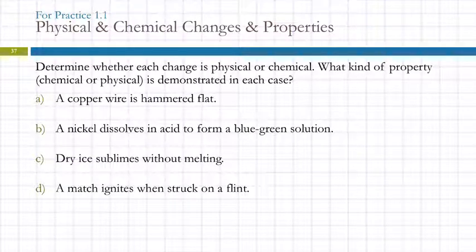Okay, so here we're supposed to determine whether each change is physical or chemical, and then what kind of property is demonstrated in each case. So we take a copper wire and we hit it with a hammer until it becomes flat. That's a physical change. We have changed the appearance of the wire, but it's still just copper atoms. And so the property there is that copper wire can be hammered flat. Is that a physical property or a chemical property? Physical property. Because when you demonstrate it, the substance, the individual particles are not changed. So that's physical for both.